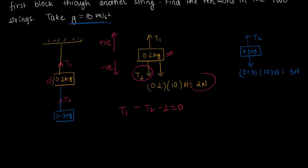And in the case of the second block, T2 minus 3 newtons, T2 minus 3, that is equal to 0.